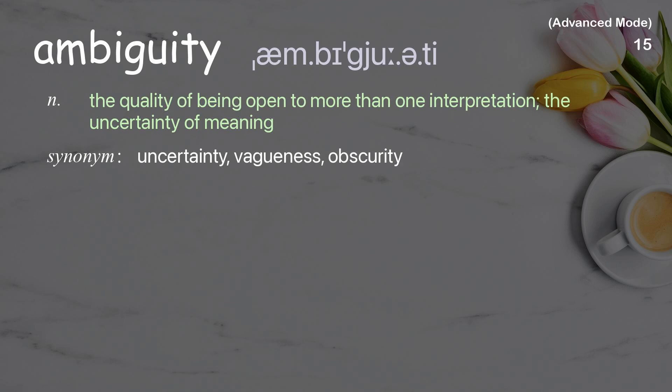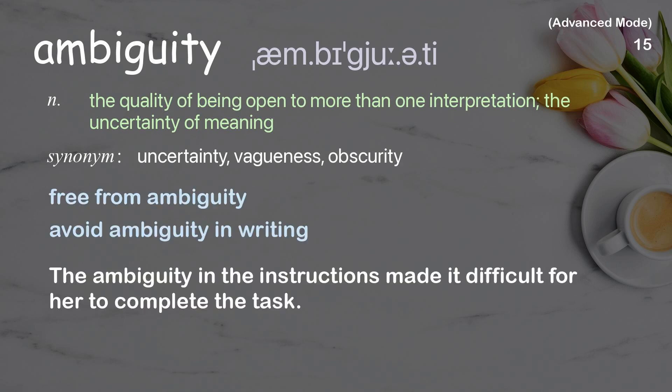Ambiguity: the quality of being open to more than one interpretation; the uncertainty of meaning. Examples: the ambiguity in the instructions made it difficult for her to complete the task.